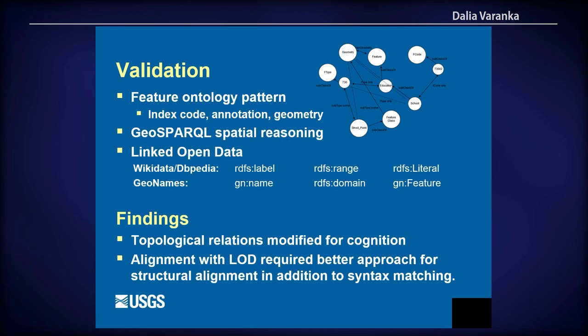Ontology design was validated through inference and competency questions. An ontology pattern infers interchangeable feature type references consisting of index codes, natural language annotation, and GIS geometries. Data integration was tested through SPARQL and GeoSPARQL queries such as nearby points and entities within.